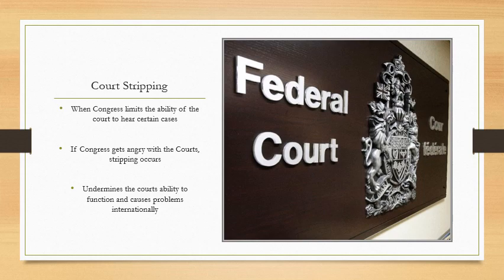Court stripping is when Congress limits the ability of the court to hear certain cases. If Congress gets angry with the court, stripping occurs. Congress can determine what kinds of cases the federal district courts and the Supreme Court can hear and can limit their jurisdiction, saying you're not allowed to hear cases of this type. It undermines the court's ability to function, causes problems internationally, can undermine checks and balances, and can throw the whole system out of whack.